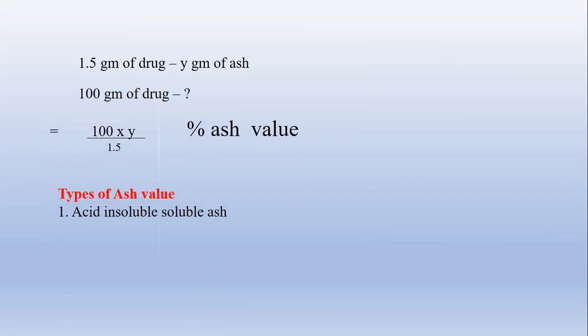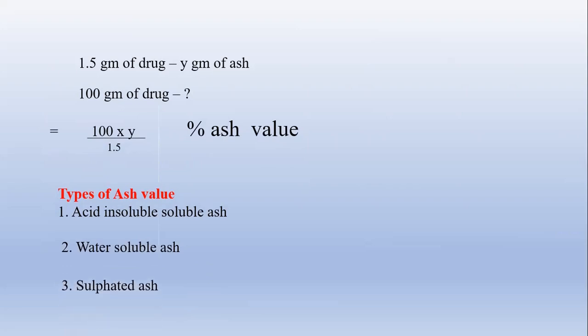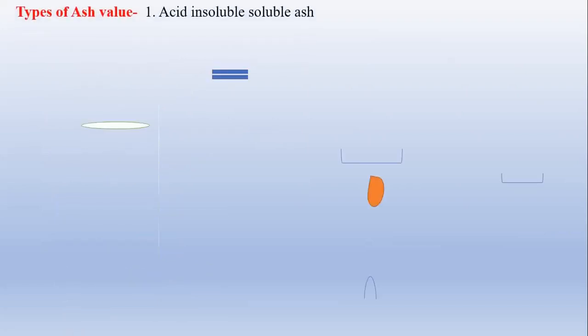There are different types of ash values. The first one is acid insoluble ash, the second is water soluble ash, and the third is sulfated ash. Let's see how acid insoluble ash is performed. For acid insoluble ash, the name itself indicates there is a use of acid — not concentrated, but we have to utilize a dilute acid for this particular experiment. Just take 10 ml of the acid.